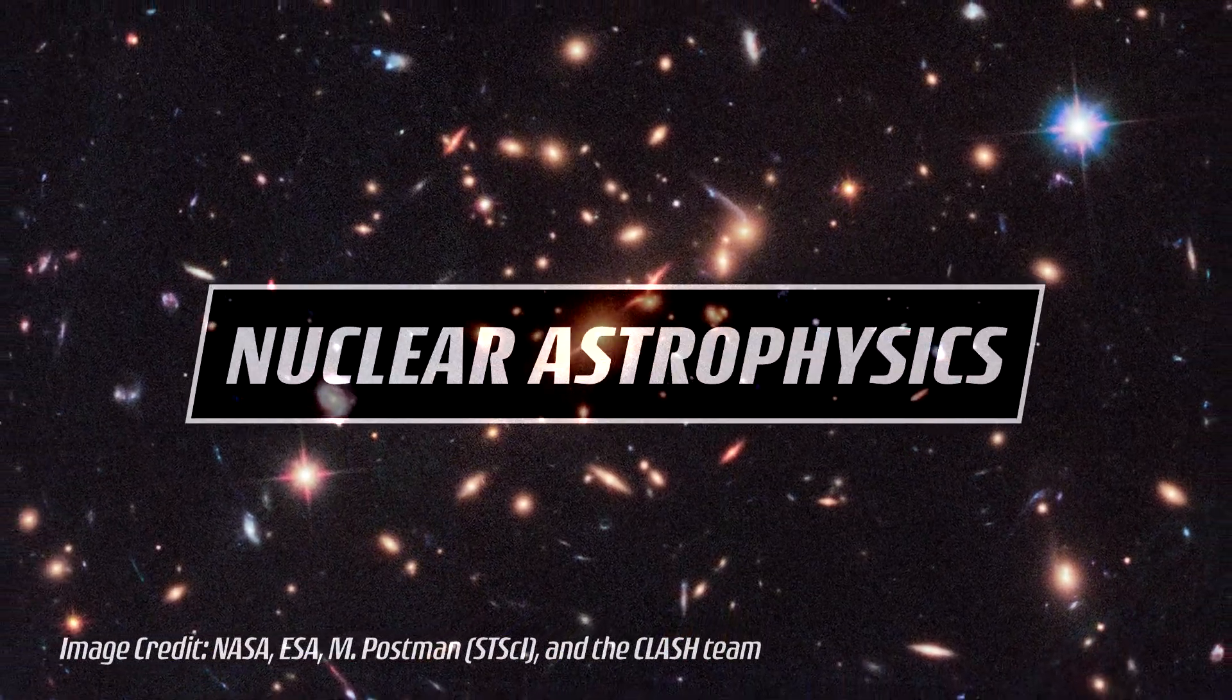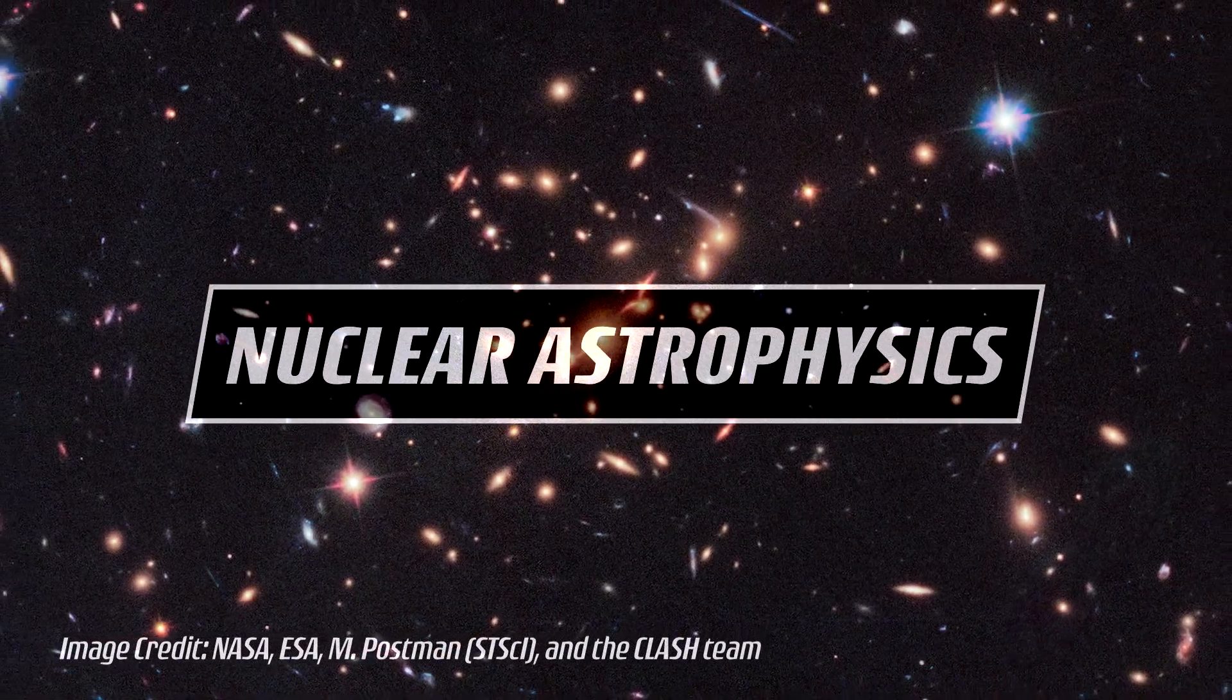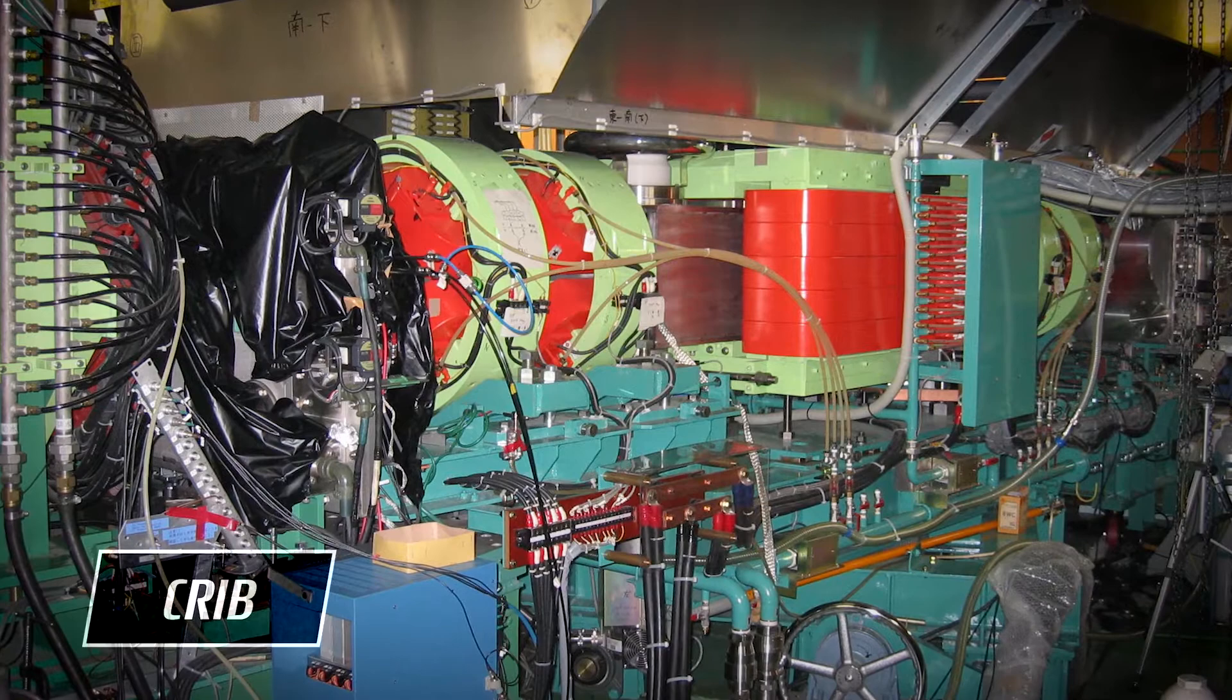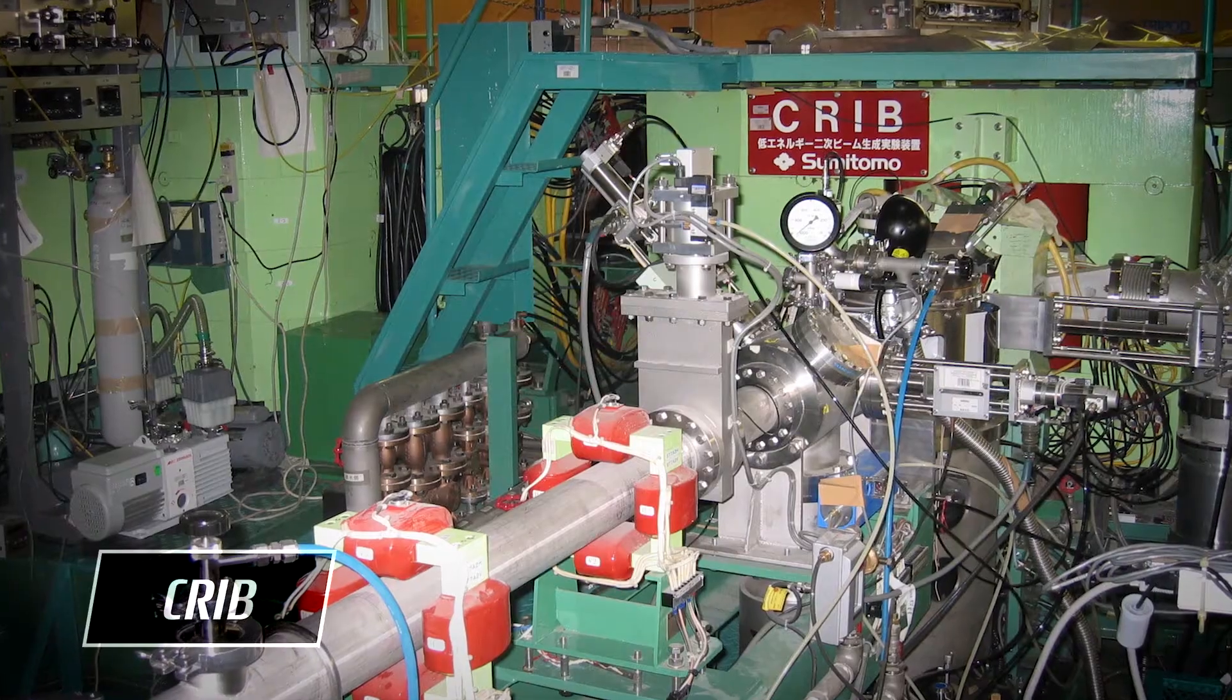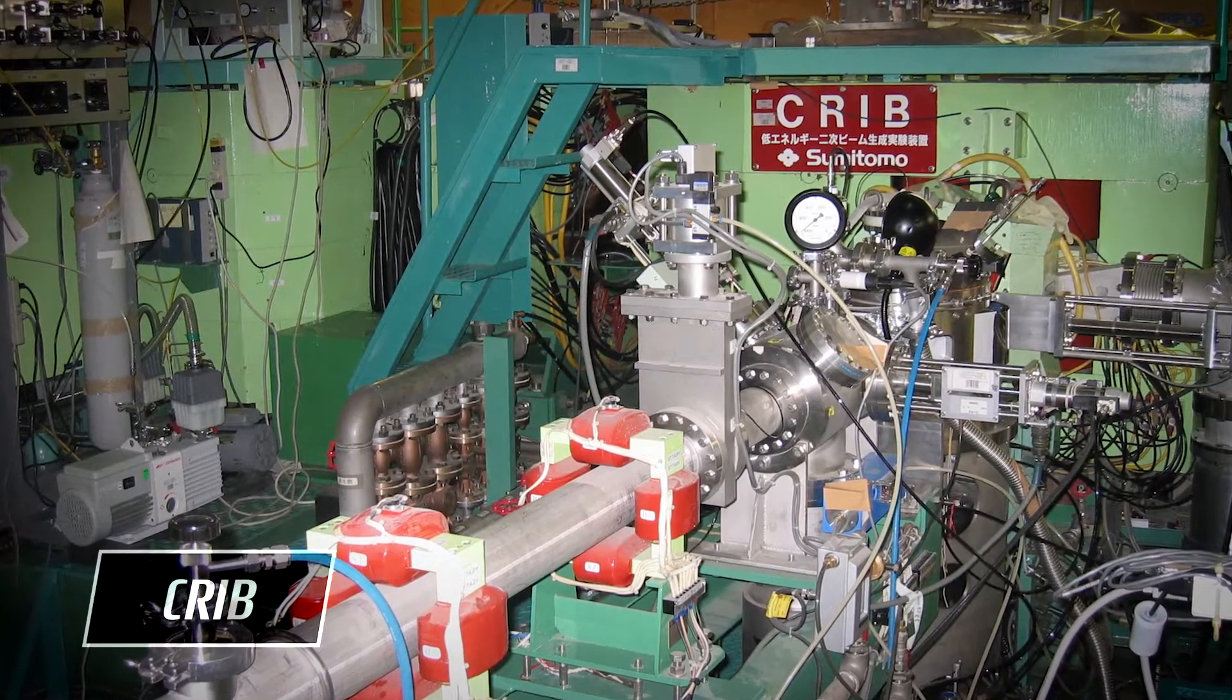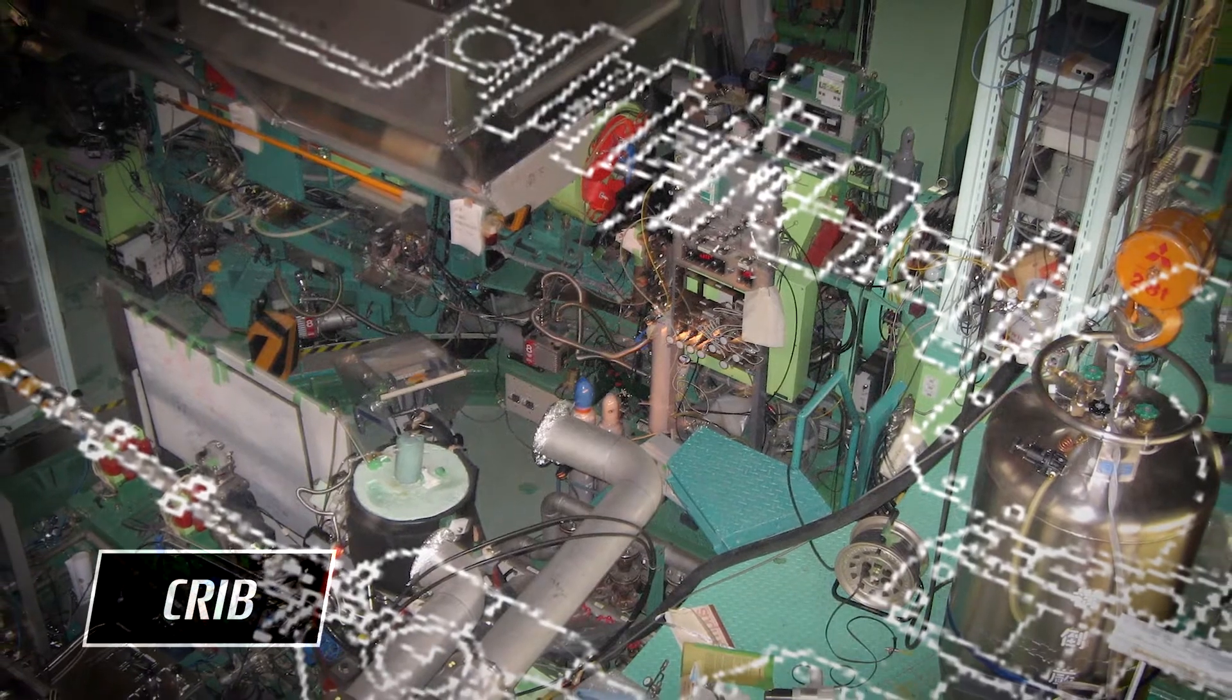We know the basic story, how the elements were created in this universe. But we don't know the details, and there are still many mysteries. The facility we are currently using is called CREVE. This facility can produce low-energy RI beams. It's very good because astrophysical reactions take place at quite low energy compared to the typical accelerator energy.